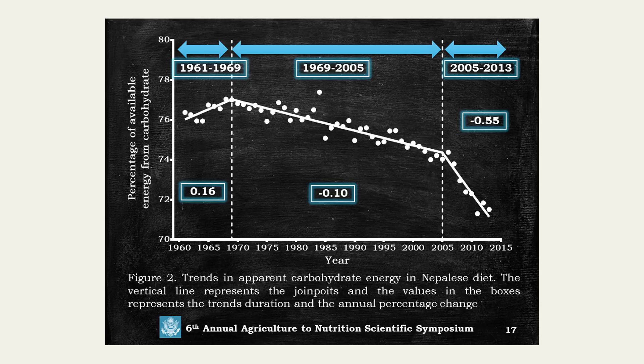For apparent energy from carbohydrate, we extracted three phases. The first phase is from 1961 to 1969. After 1969, there is a decrease in carbohydrate energy in the Nepalese diet up to 2005, and from 2005 there is a sharper decrease. The annual percentage change shows an initial increase followed by a decrease of 0.1% per year from 1961, then 0.55% thereafter.